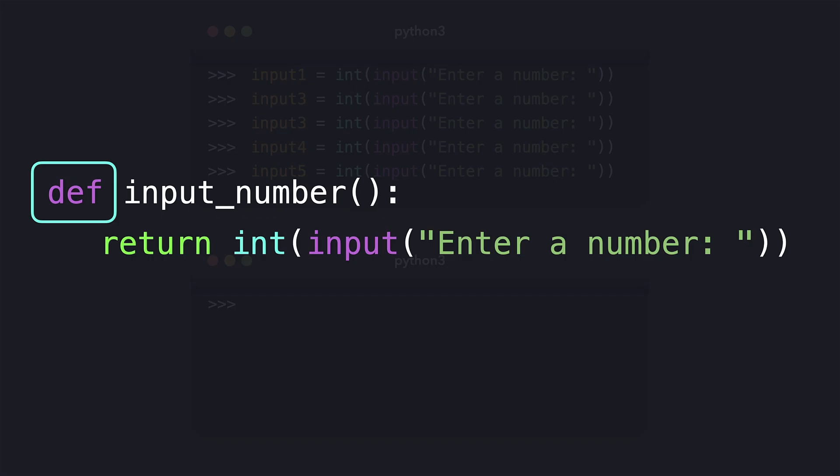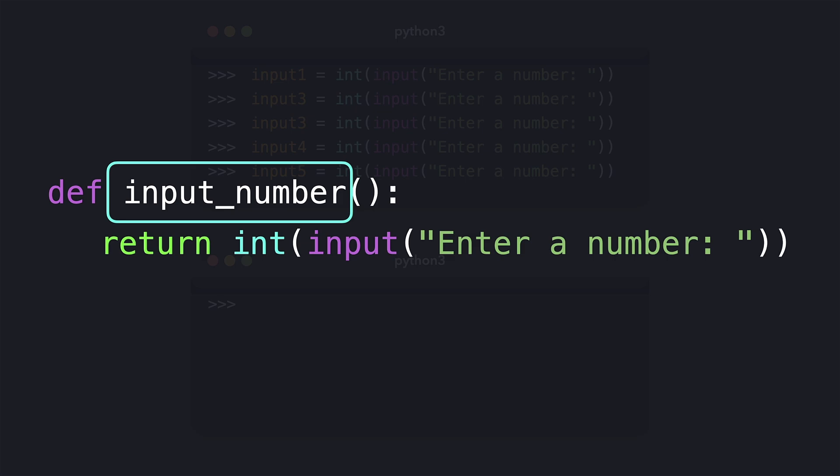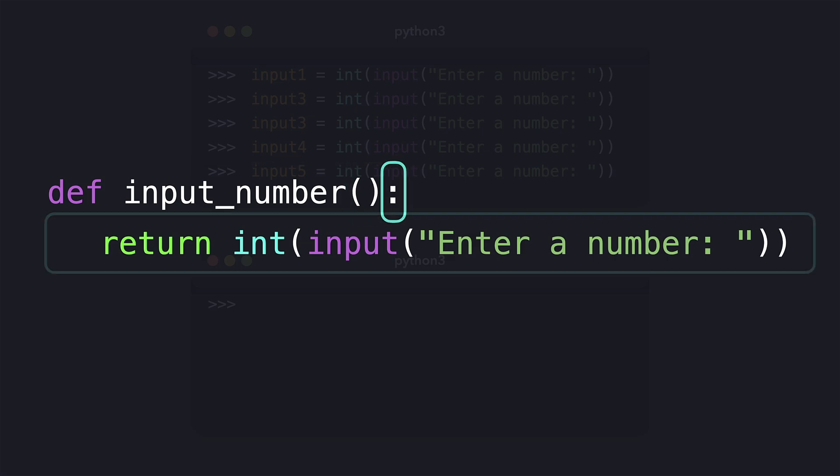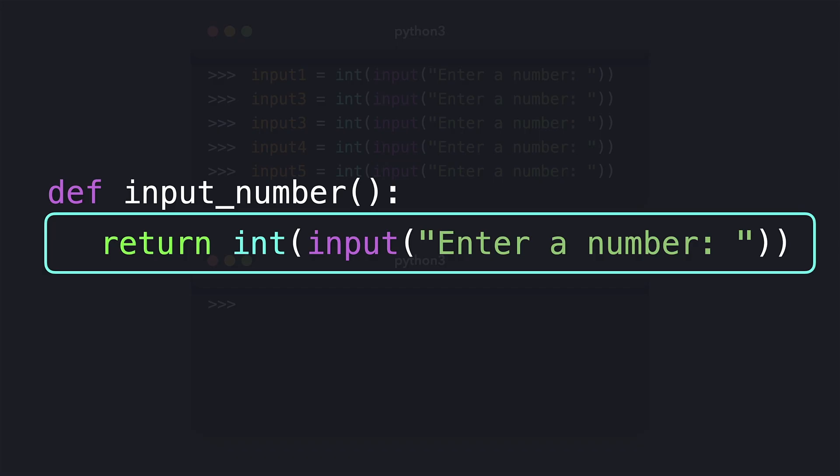We just created a function by using Python's built-in 'def' keyword, which is short for definition. It lets Python know that we want to create a new function. This is followed by the name of the function and two parentheses, followed by a colon. Next we have the function body, which is what the function is all about — it contains the instructions that we want the function to execute whenever we call it.